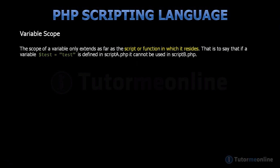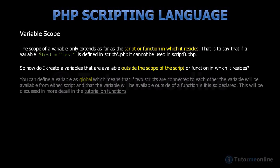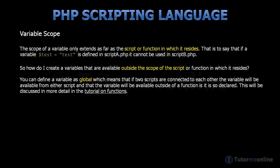The scope of a variable refers to where in a script a variable will be available for use. The scope of a variable only extends as far as the script or function in which it resides. In other words, if a variable is defined in script a.php, it cannot be used in script b.php. You can define a variable as global, which means that if two scripts are connected to each other, the variable will be available from either script, and will be available outside of a function if so declared. This will be discussed in more detail in the tutorial on functions.